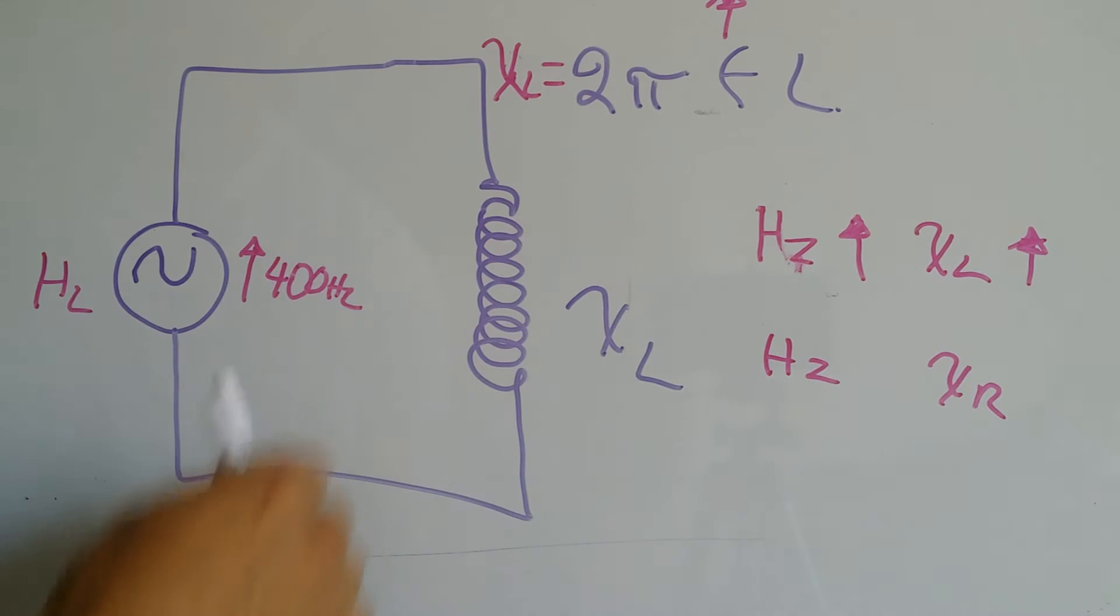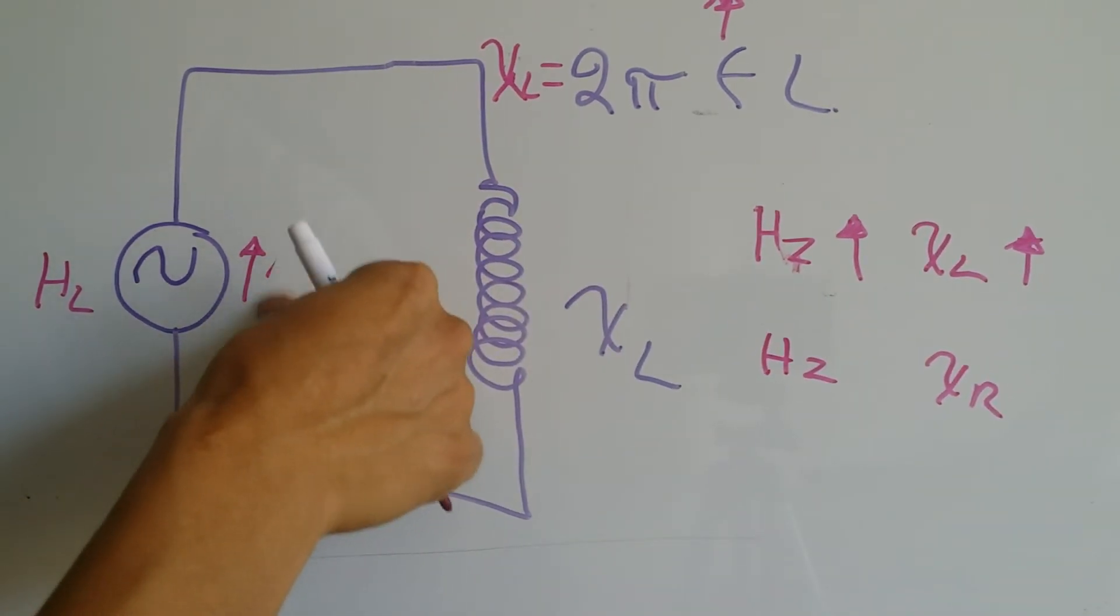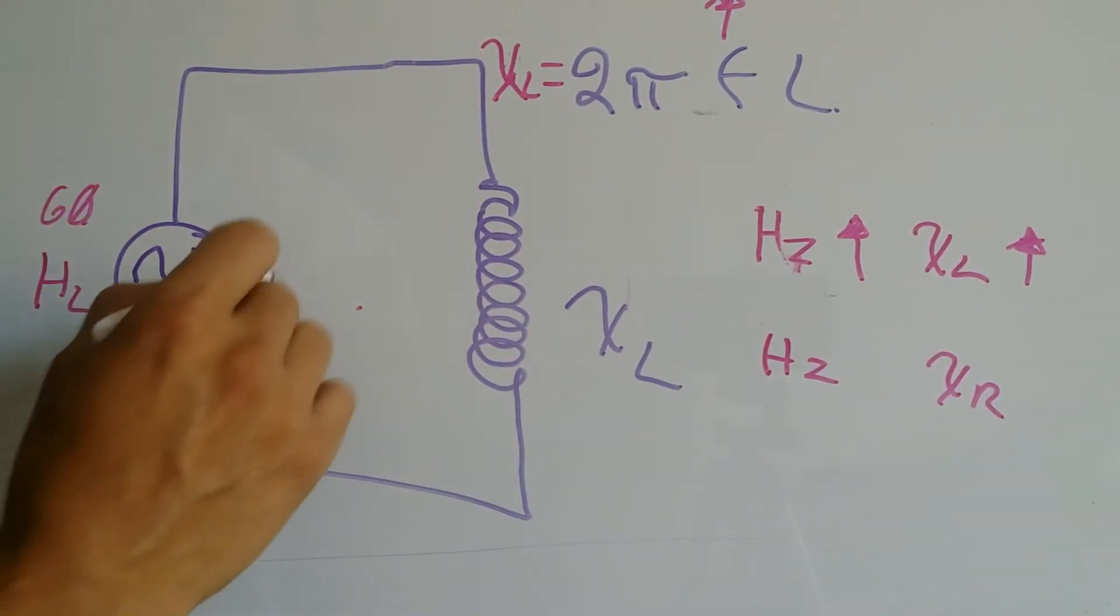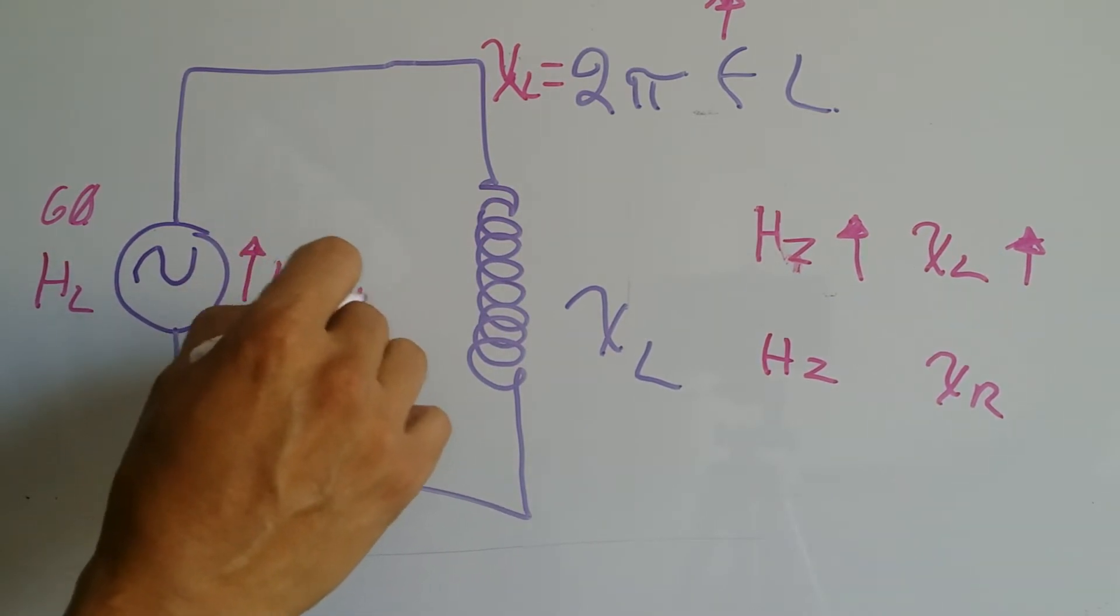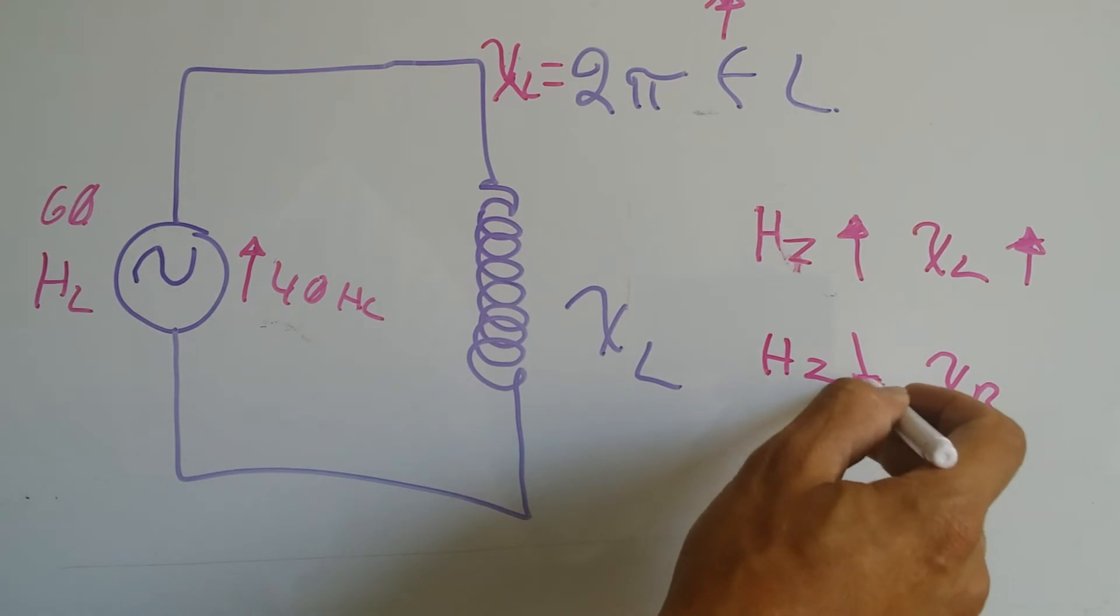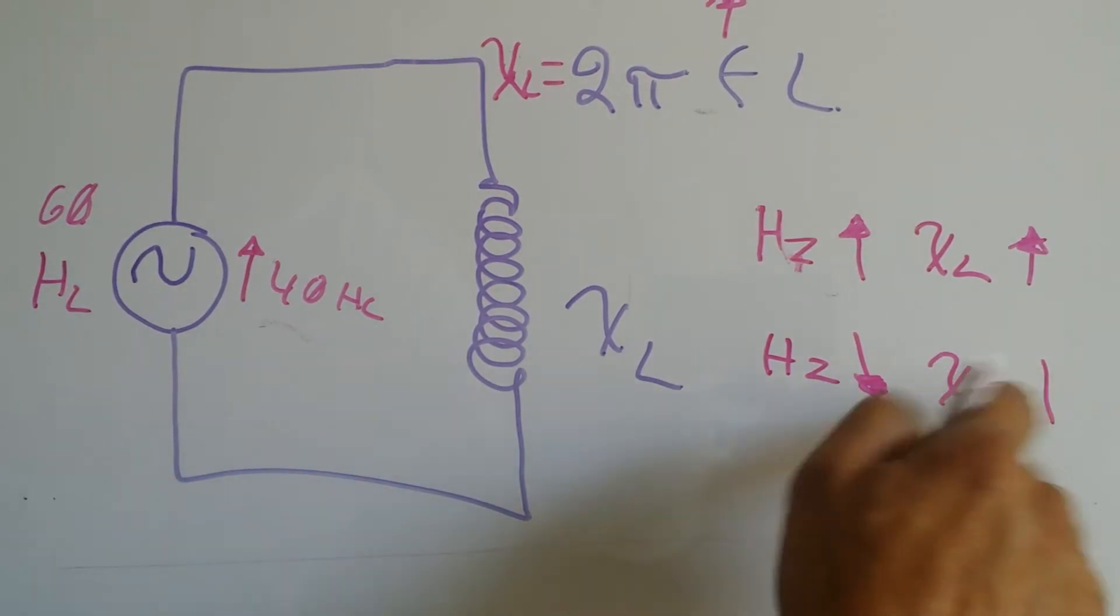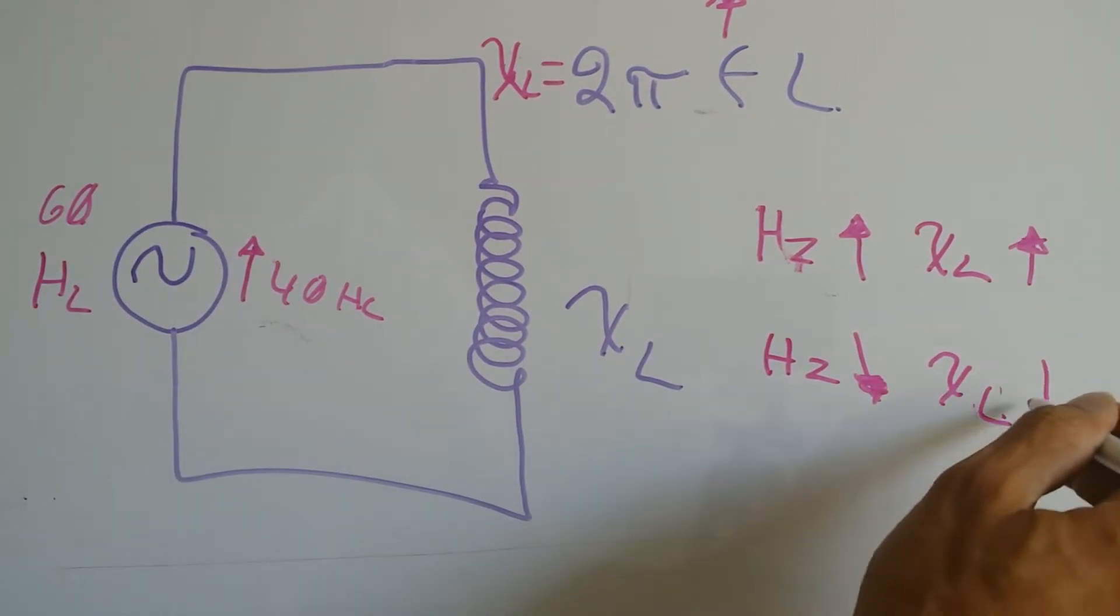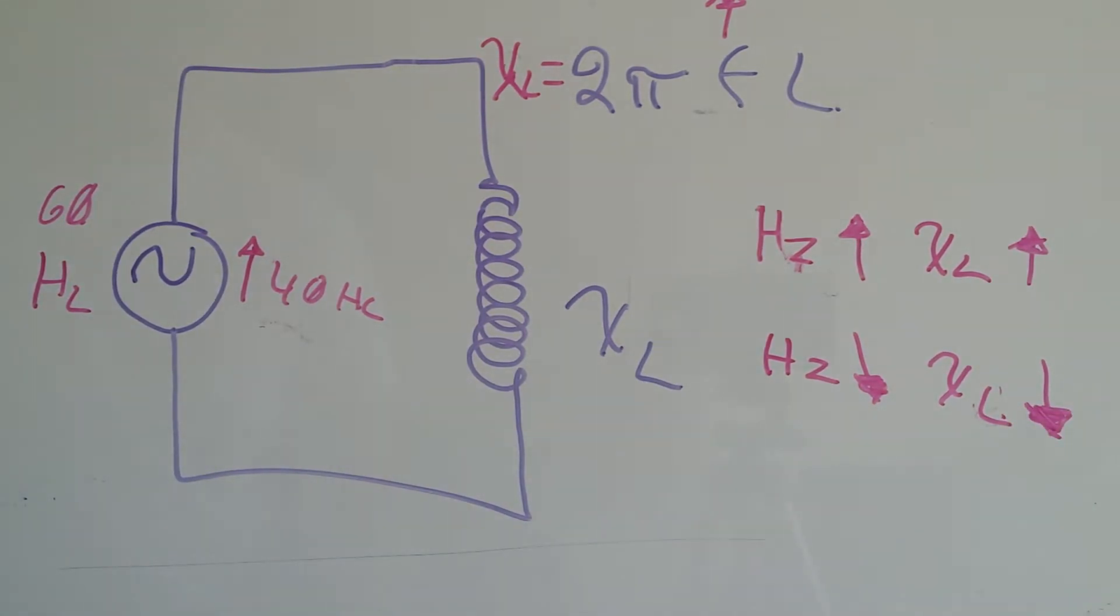If we drop our frequency from 60 Hz, which is normal, to 40 Hz, by dropping our frequency, our reactance will go down. So they are closely related.